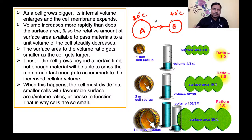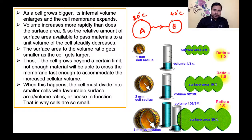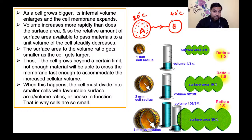हम अपने environment से via air connected हैं। हमारा body temperature high है, तो naturally heat शरीर के अंदर से बाहर आएगी और nature में dissipate करेगी। लेकिन ऐसा नहीं होता क्योंकि internal volume ज़्यादा है, heat production ज़्यादा है, लेकिन उस proportion में surface area से heat बाहर नहीं निकल पाती — क्योंकि surface area in comparison to volume small है।